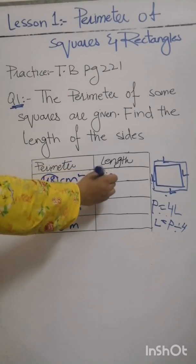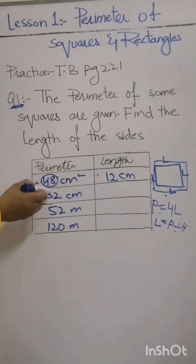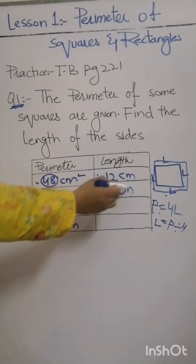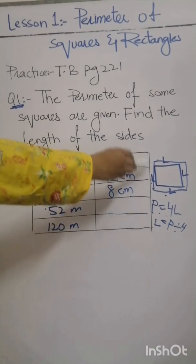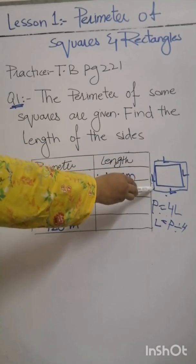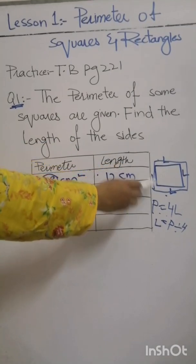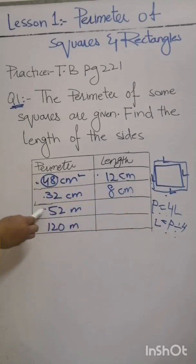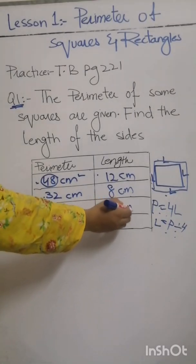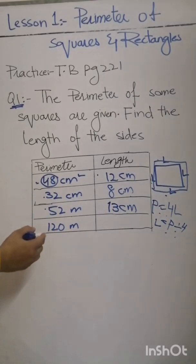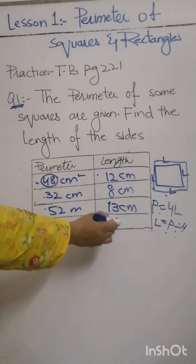When we divide 48 by 4 we get 12 centimeters, and if we divide 32 by 4 we get 8 centimeters — that is the side length. Here again we have a perimeter of 52 meters; we divide 52 by 4 and we get 13 meters. And we divide 120 meters by 4 to get 30 meters.